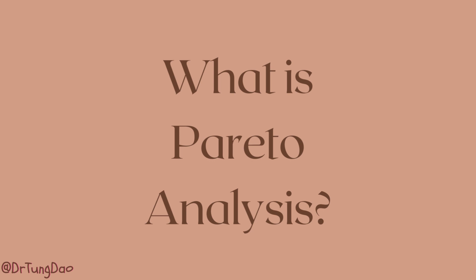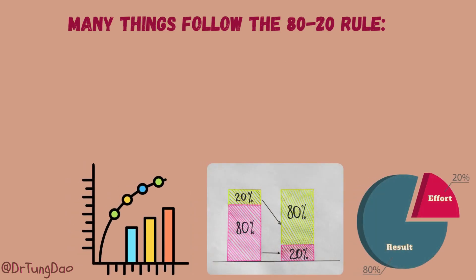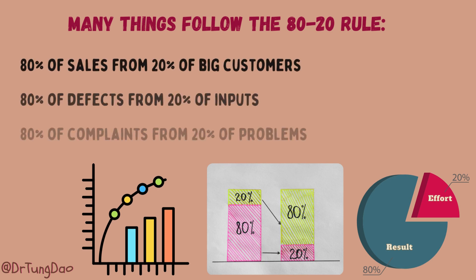We can find that many things follow the 80-20 rule in business contexts. For example, 80% of sales come from 20% of big customers, 80% of defects come from 20% of inputs, or 80% of complaints come from 20% of problems.